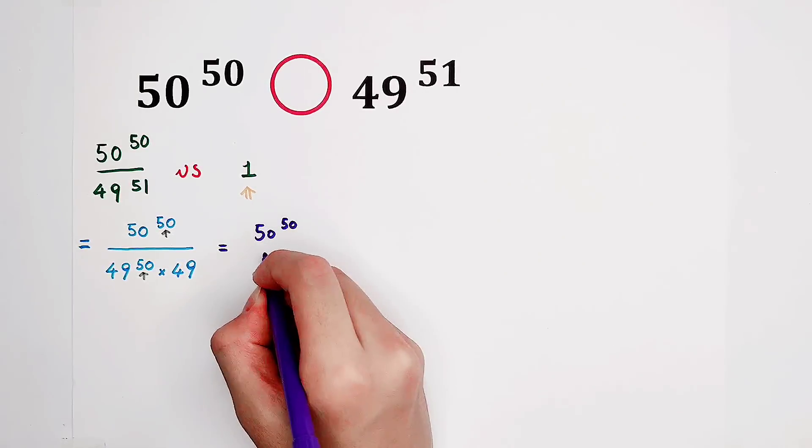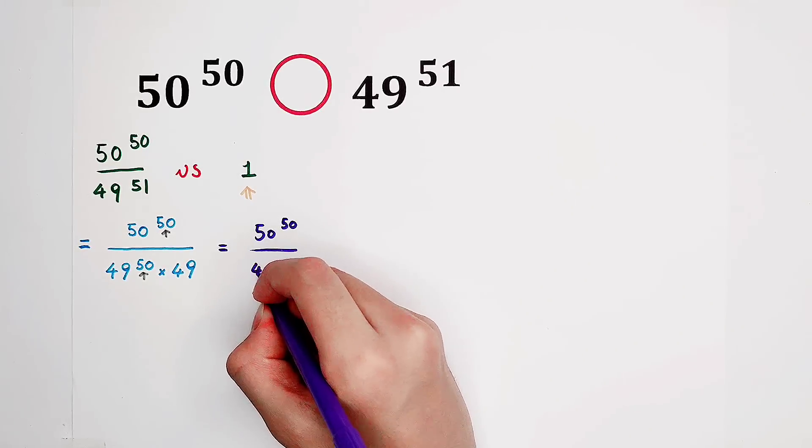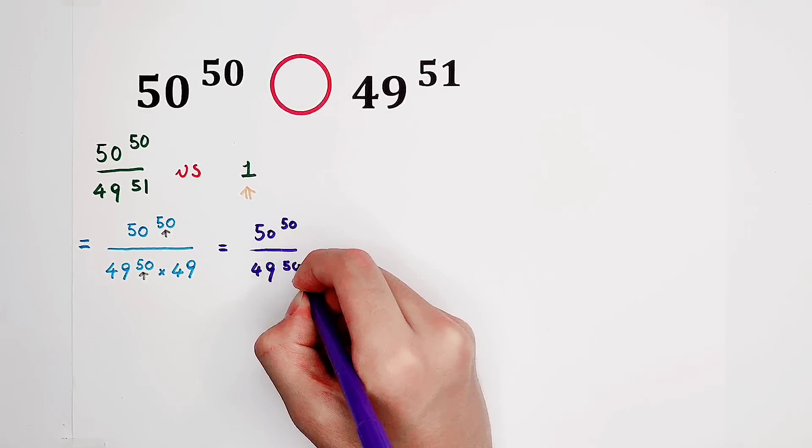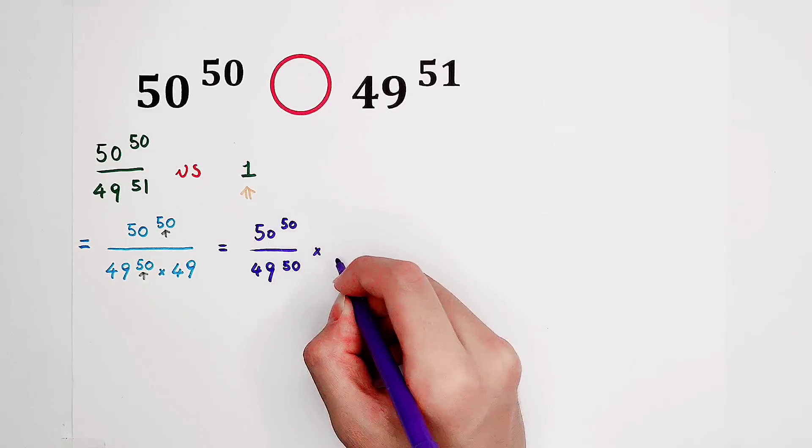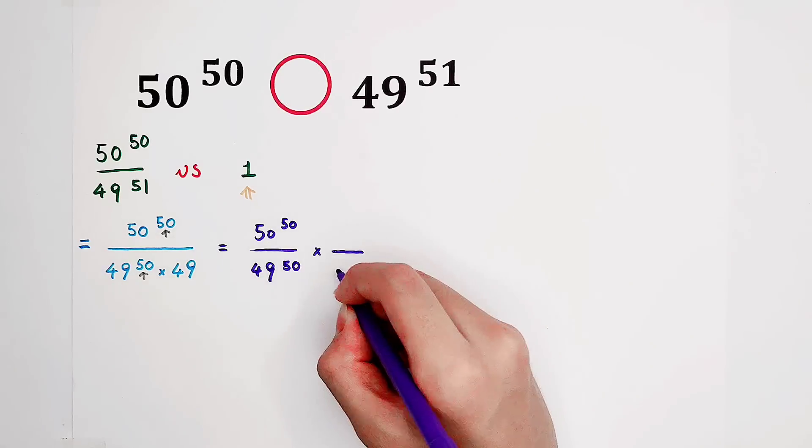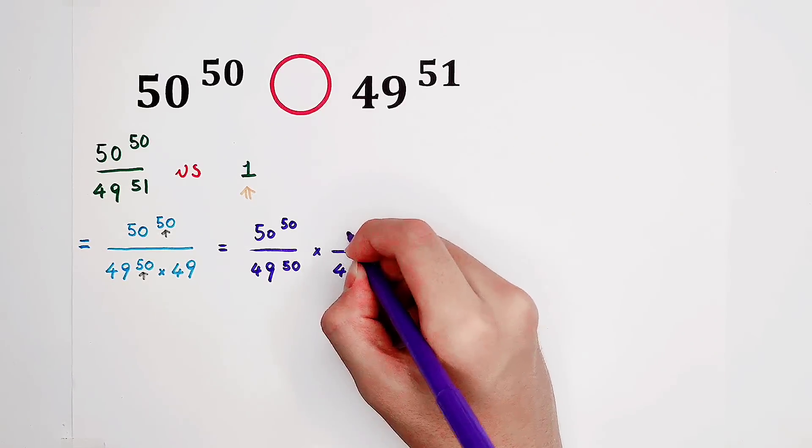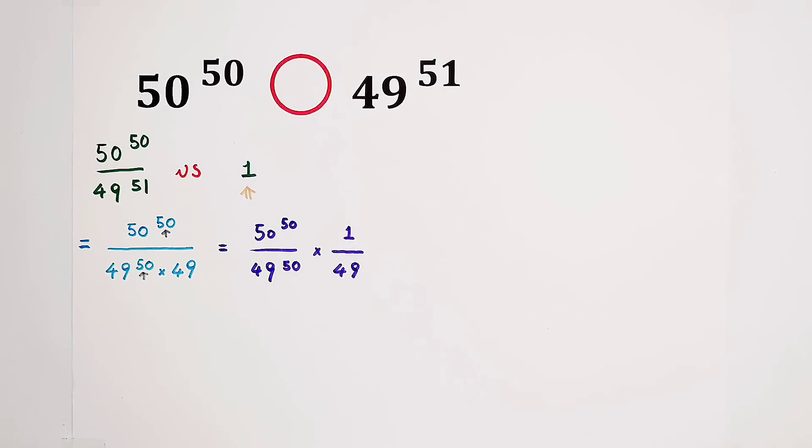It is 50^50 divided by 49^50. This denominator, 49^50, belongs to our numerator. And then I'm gonna separate this 49. Let it be alone.